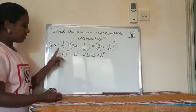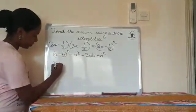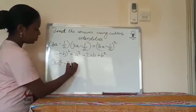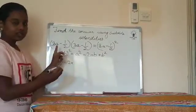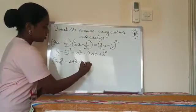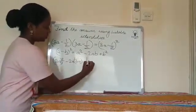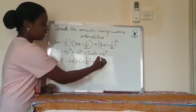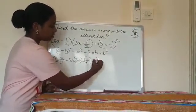So a² equals (3a)², minus 2 into a equals 3a into b equals 1/2, plus b² equals (1/2)².